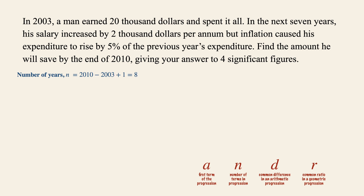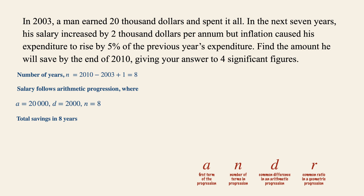To get the amount saved, let's break down the question into two parts. The first part is the salary, which follows an arithmetic progression with first term a = 20,000, common difference d = 2,000, and n = 8. The total salary across eight years uses the sum formula: 8 over 2, multiplied by two times 20,000 plus eight minus one times 2,000.